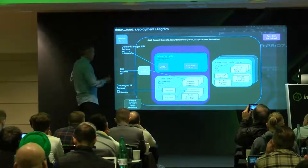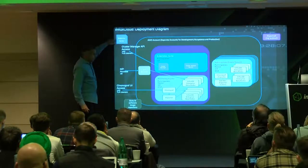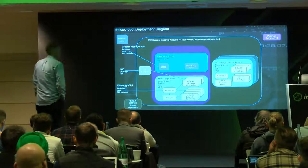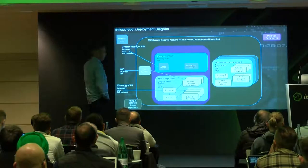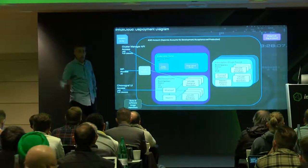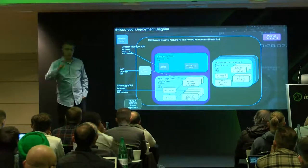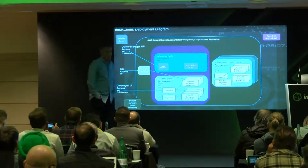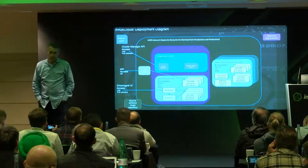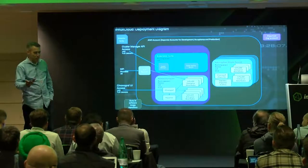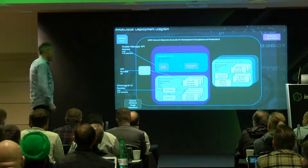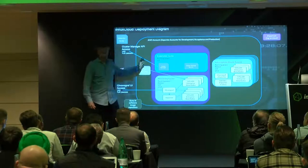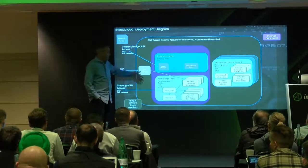In the slides, anything that looks like a dog-eared rectangle is a Docker container. We're heavily using Docker inside the AWS environment. We have separate accounts set up for development, acceptance, and production environments — the same thing many of you do from a software perspective. We have a service called a cluster manager with a very exciting name that I'm embarrassed to share — it's called Potato. Engineers named it. It's used to manage the instances of the cluster.